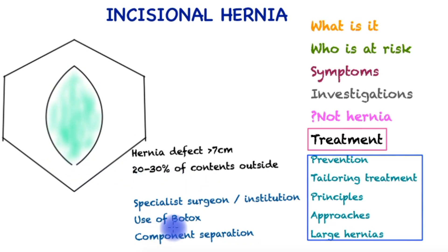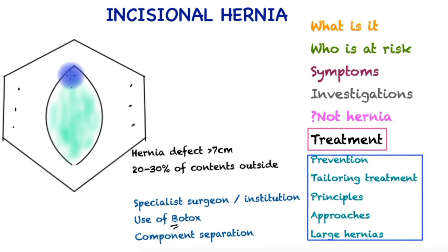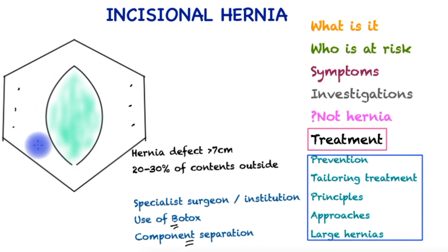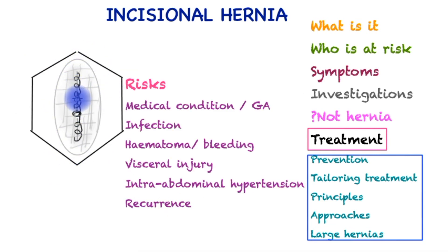Frequently, Botox injections are used on each side to cause relaxation of the abdominal muscles, allowing the midline to return towards the center. Surgeons also deploy a technique called component separation, which separates the layers of the abdominal wall on each side so the center can slide towards the middle, enabling a tension-free repair supported by a large mesh overlapping the defect by at least 5 centimeters on each side — the key principle of hernia repair.